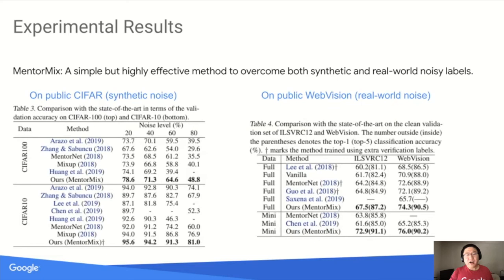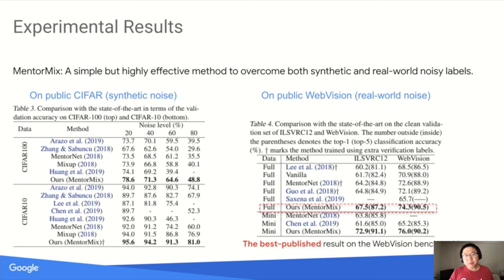We also compare our method to state-of-the-art results on two public benchmarks — CIFAR-10 and CIFAR-100 with synthetic noise on the left, and WebVision with real-world noise labels on the right. On the WebVision dataset, one of the largest datasets of real-world uncontrolled noise labels, we achieved the best published result, improving the previous best method by about 3% in terms of precision at 1. This is significant because WebVision uses the same validation set as ImageNet, and 3% improvement on the ImageNet validation is a significant improvement.